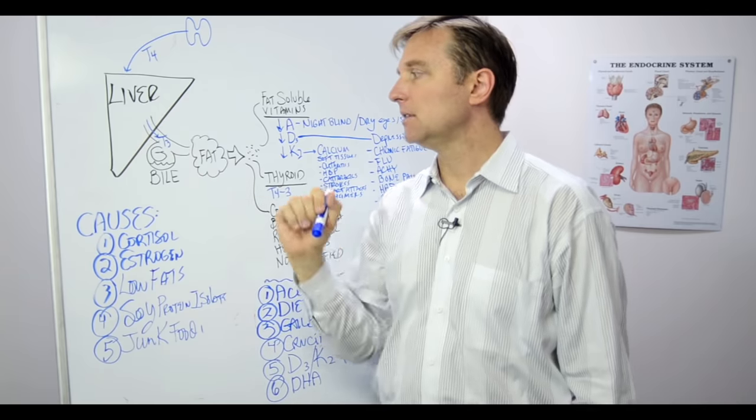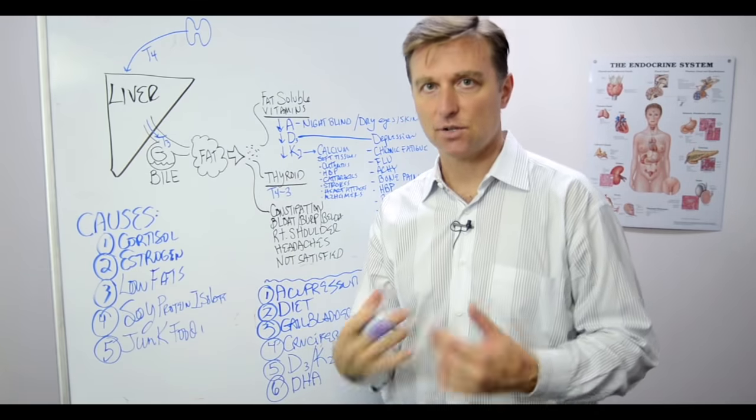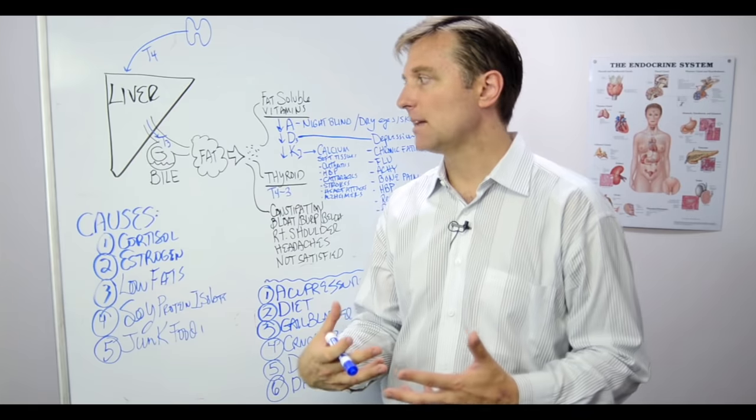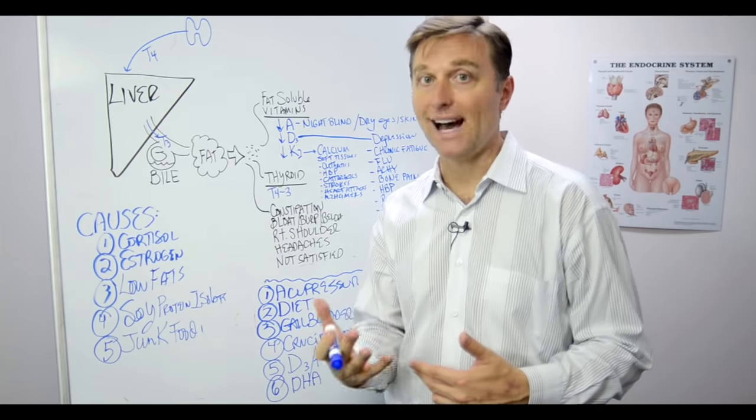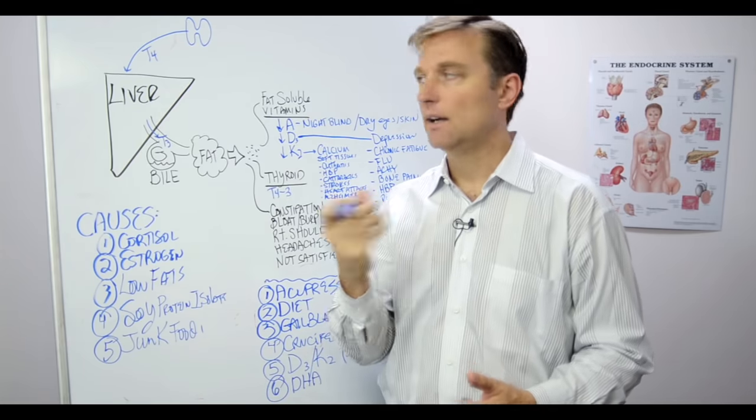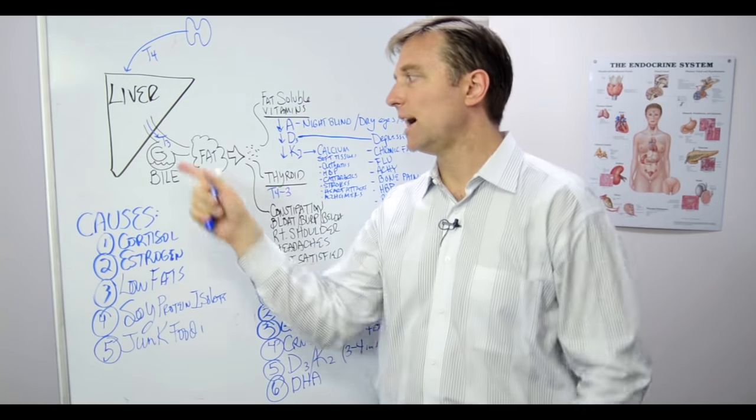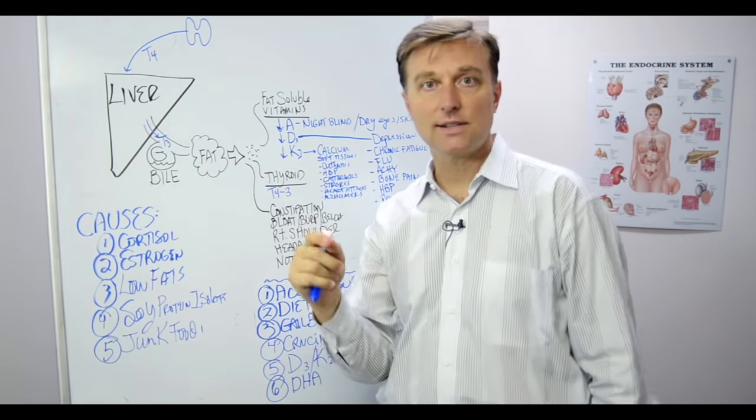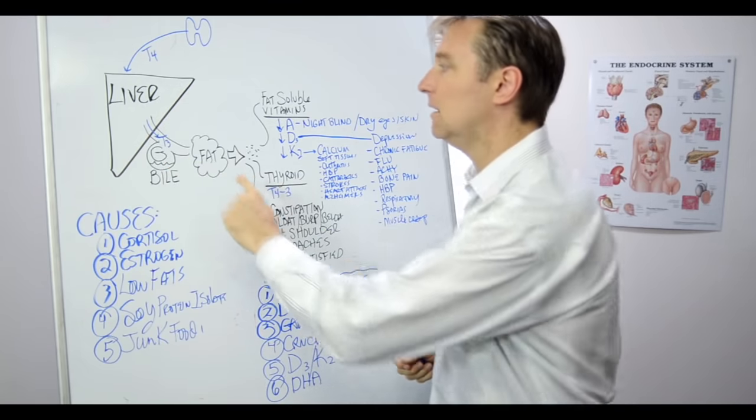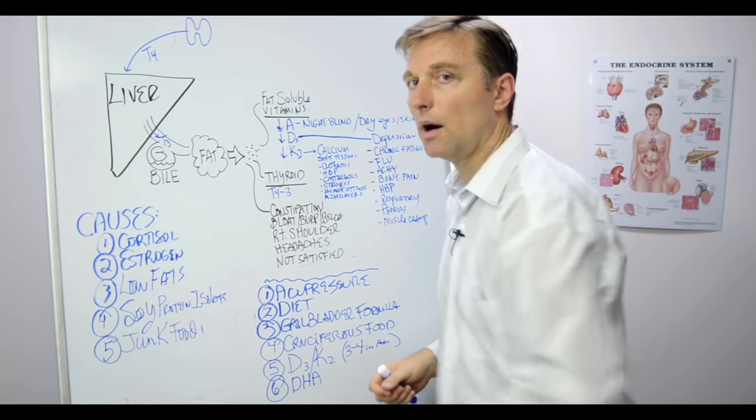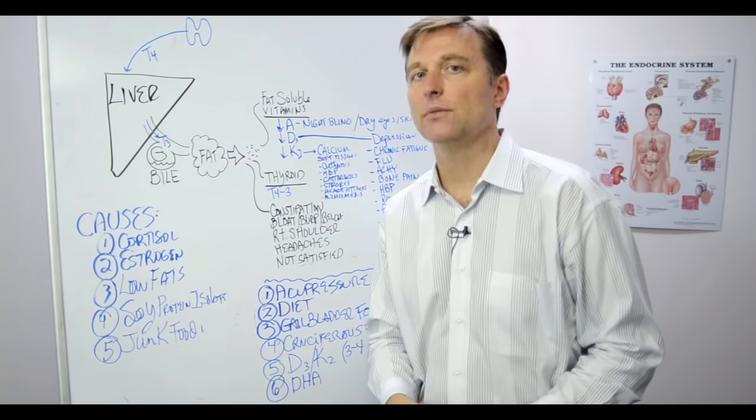Bile is made by the liver and bile is like the detergent that breaks down the grease. It's a fluid that the liver makes to help dissolve fat. So when you eat fat, it signals the gallbladder to squeeze and contract this stored bile into the small intestine, so you can actually break down dietary fat into smaller particles. Now it does get help from the pancreas.